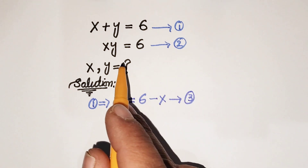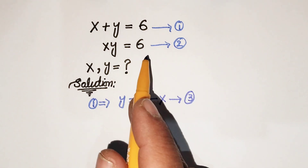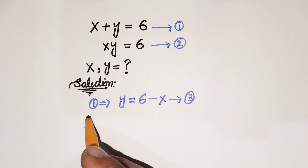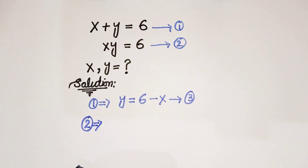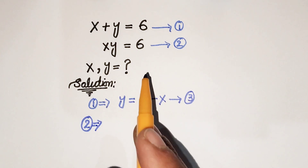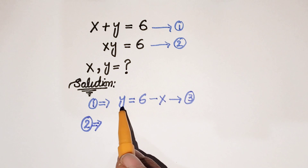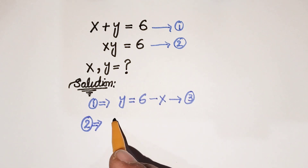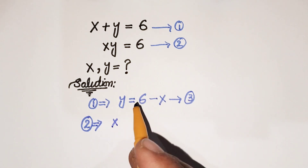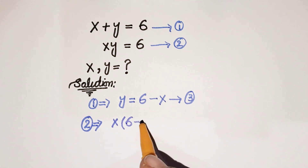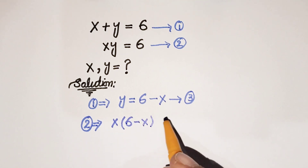Now from equation number 2, xy is equal to 6. We are going to substitute the value of y from equation 3 into equation 2. So x times (6 minus x) is equal to 6.